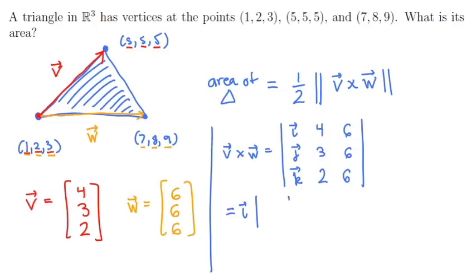Now we use the shorthand as i times a block of numbers, minus j times a block of numbers, plus k times a block of numbers. Three small 2 by 2 determinants. The 2 by 2 determinant for i consists of the block 3, 6, 2, 6. For j, we get the block 4, 6, 2, 6. And the block for k, by crossing off rows and columns, we get 4, 6, 3, 6.